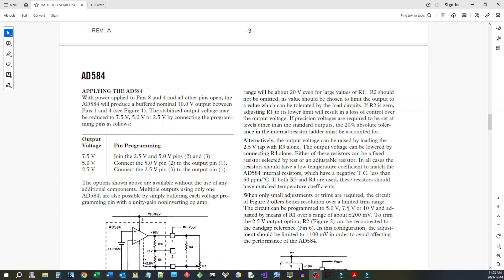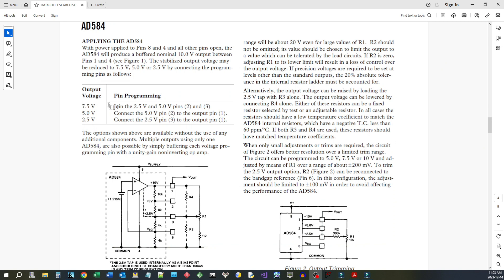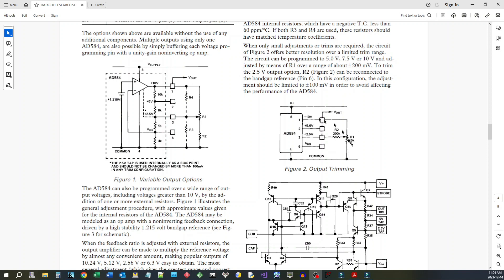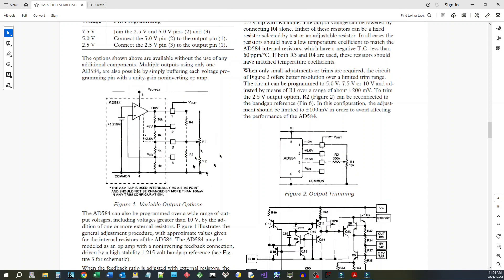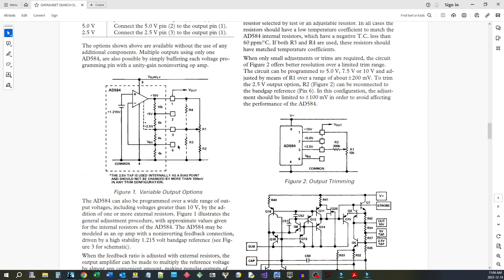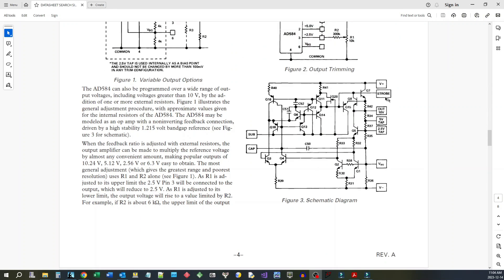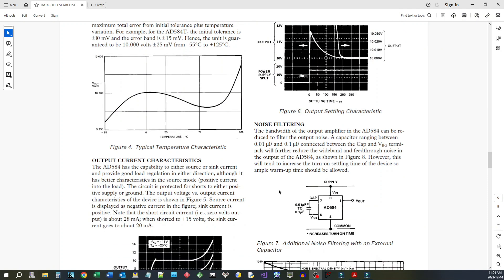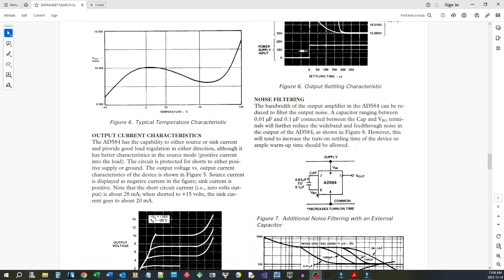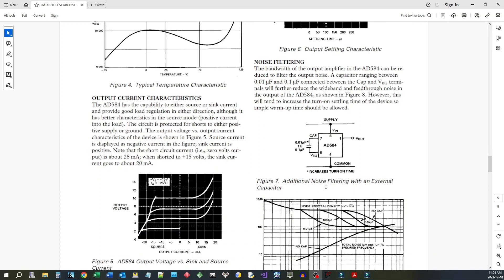This is how you program it, it's pretty simple. To get 10 volts you just leave it all open. 7.5 volts you join pins 2 and 3. At 5 volts you join pin 2 to pin 1. At 2.5 volts, that's what we're going to do. They do suggest putting on a small little capacitor here between 0.01 or 10 nanofarad and 100 nanofarad to reduce the noise, we'll do that.